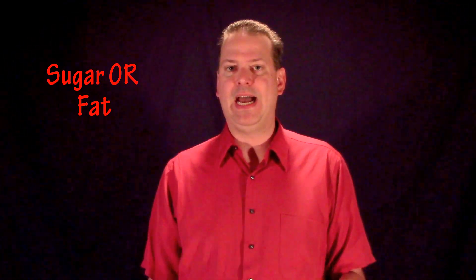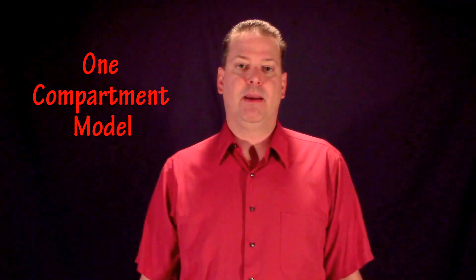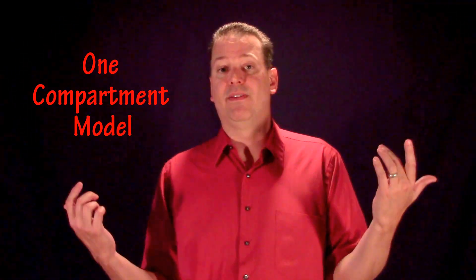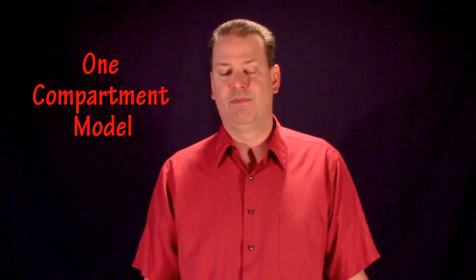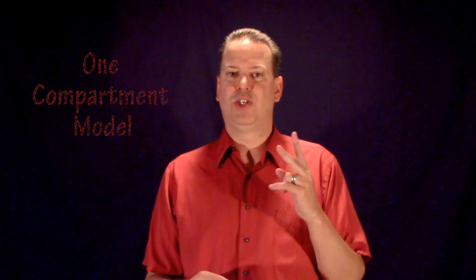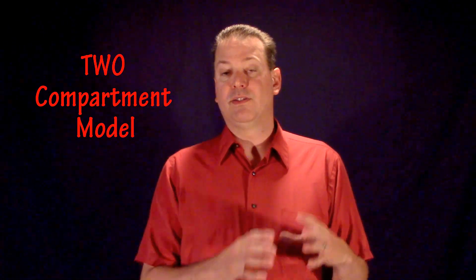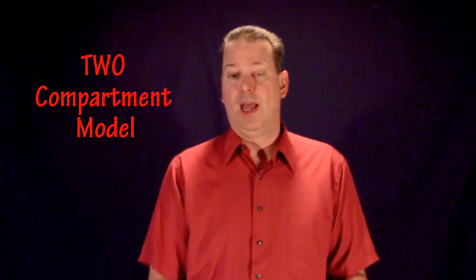This is where most diets get things wrong. They make the assumption that you burn both sugar and fat equally. This is called a one compartment model. Everything is in the same pot and can all come out at the same time. Unfortunately, our bodies aren't that simple. The human body is a two compartment system, meaning there is glucose, sugar, and there is fat. They are separate.